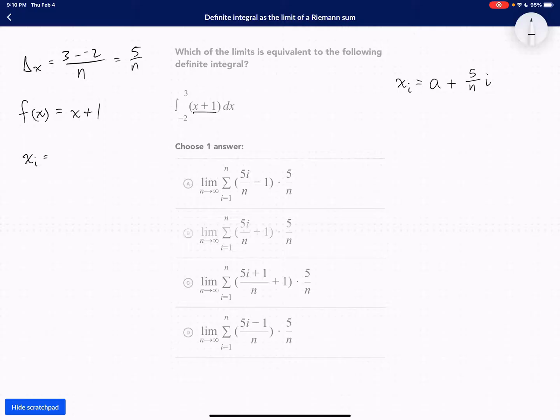Now, the a in our case is going to be the lower bound. So we're going to say negative 2. And that's what's getting plugged into the f of x. So that would mean x sub i would equal negative 2 plus 5 over n times i. And I want to throw the i up there with the 5.